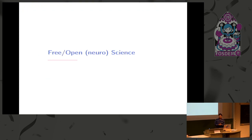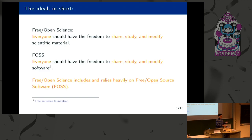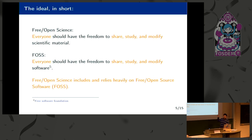So what do we mean by free and open science? Free and open means everyone should have the freedom to share, read, or make amendments and modify scientific material. Everyone should have freedom to access and study what we are actually working on.